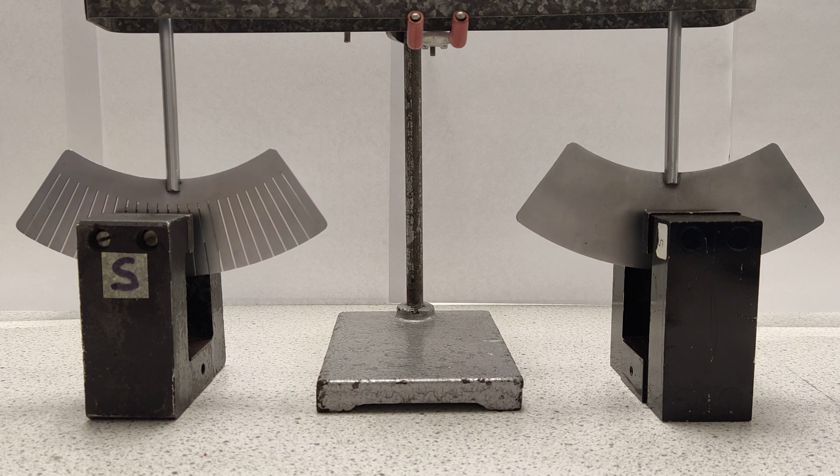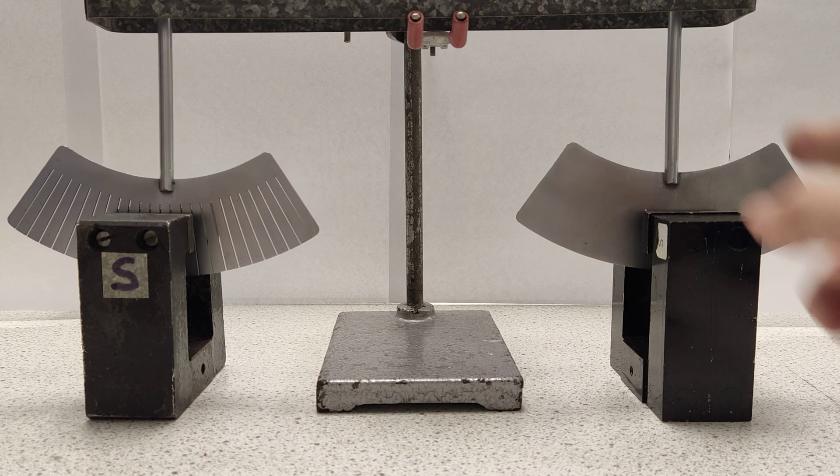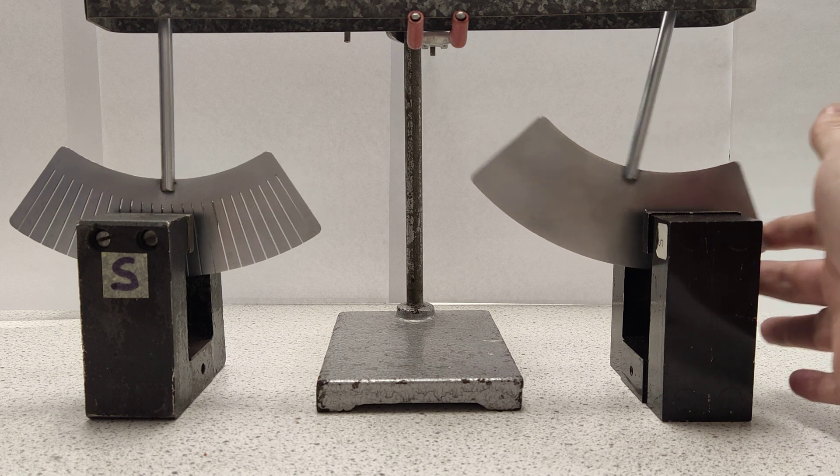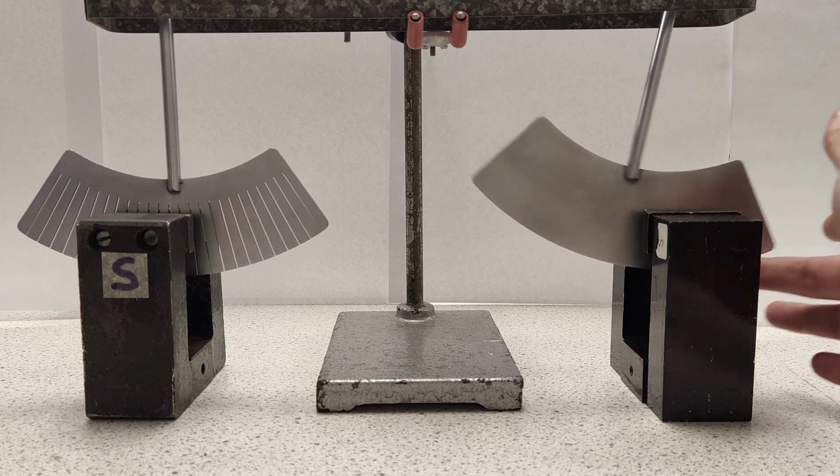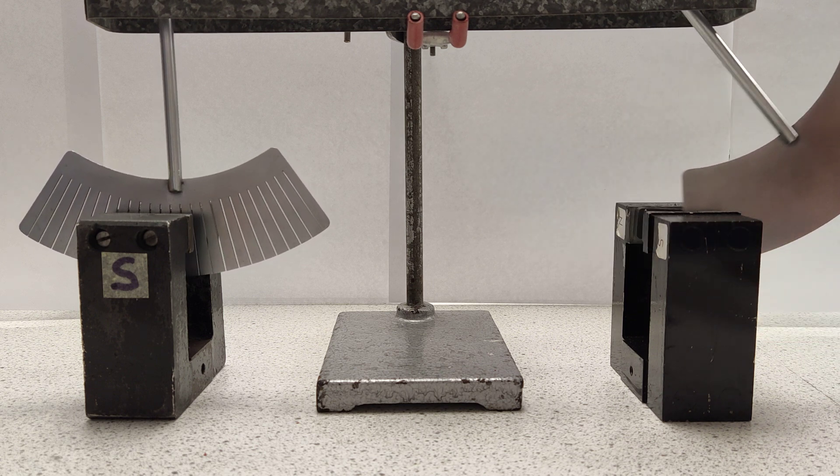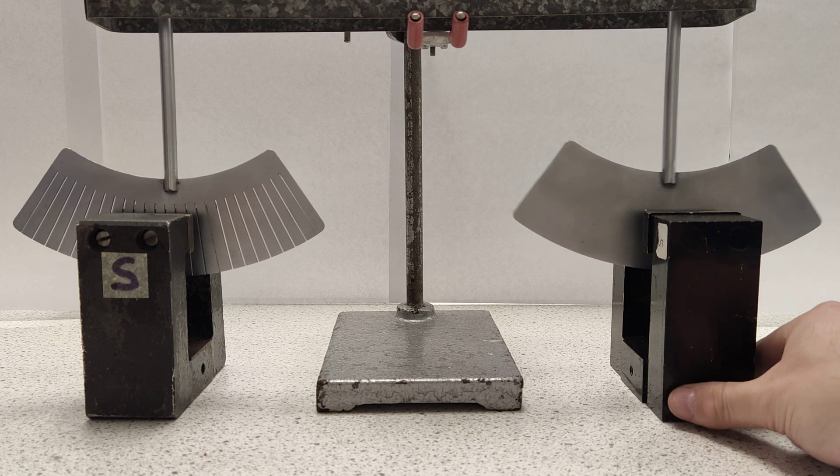So the magnitude of the EMF induced in a circuit or in here in the metal as it moves is proportional to the rate of change of magnetic flux linkage that cuts across the circuit.